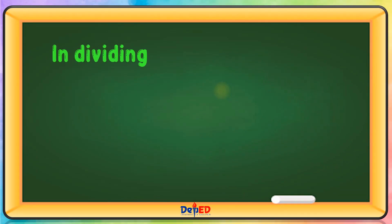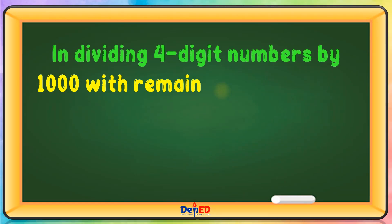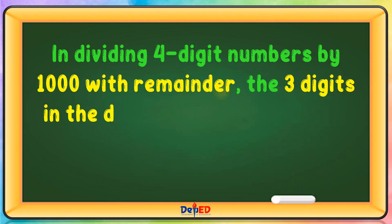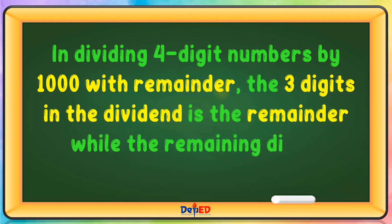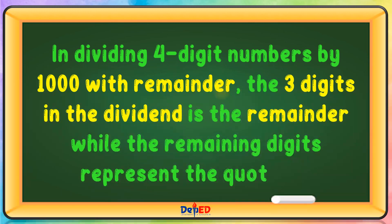In dividing 4-digit numbers by 1,000 with remainder, the last 3 digits in the dividend is the remainder while the remaining digits represent the quotient.